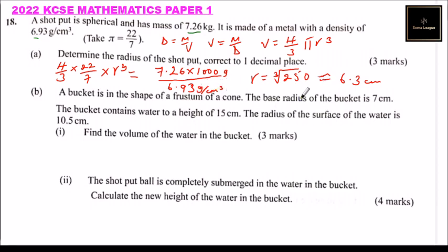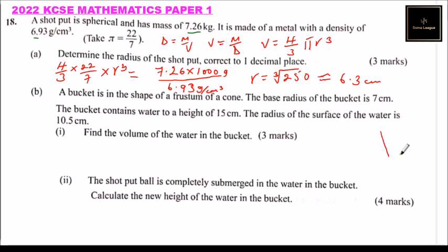At part B, we are told a bucket is in the shape of a frustum of a cone. The base radius of the bucket is 7 centimeters. The bucket contains water to a height of 15 centimeters. The radius of the surface of the water is 10.5 centimeters. Find the volume of the water in the bucket. Our bucket is in the shape of a frustum.